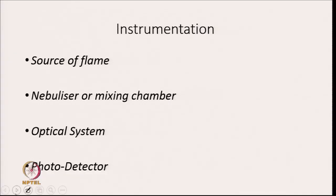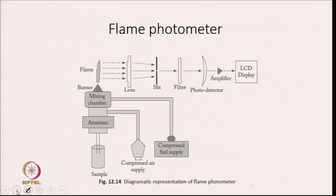Now I will discuss the instrumentation. The flame spectrometer has four important components: the source of flame, the nebulizer or mixing chamber, the optical system, and the photodetector. In the typical flame photometer, the sample goes to an atomizer, fuel is mixed in the mixing chamber, the flame is produced, light passes through a lens and then through a slit, then through a filter, and finally through an amplifier to an LCD display.